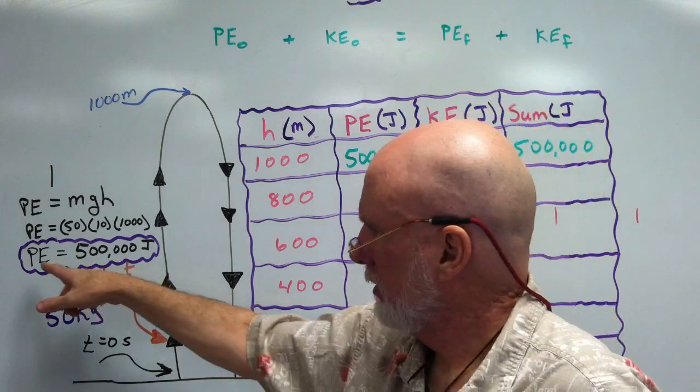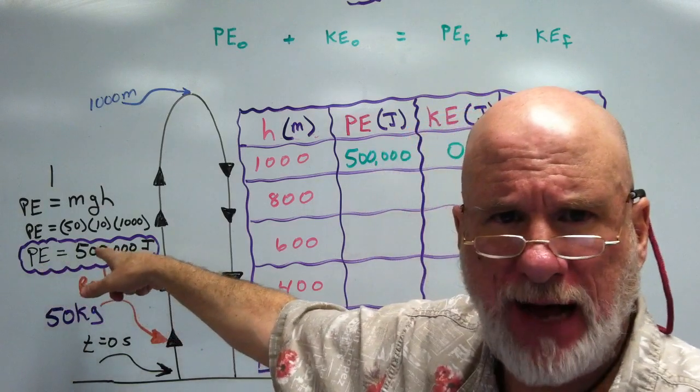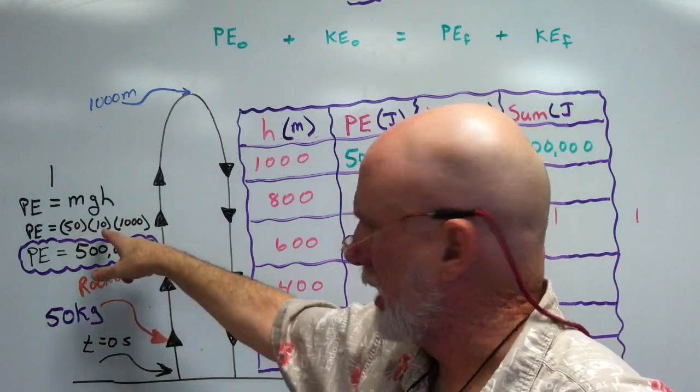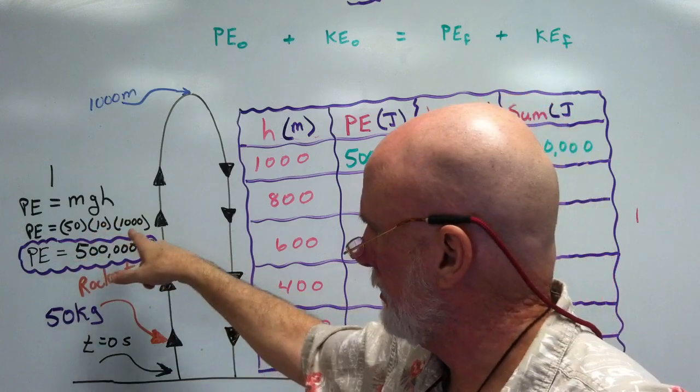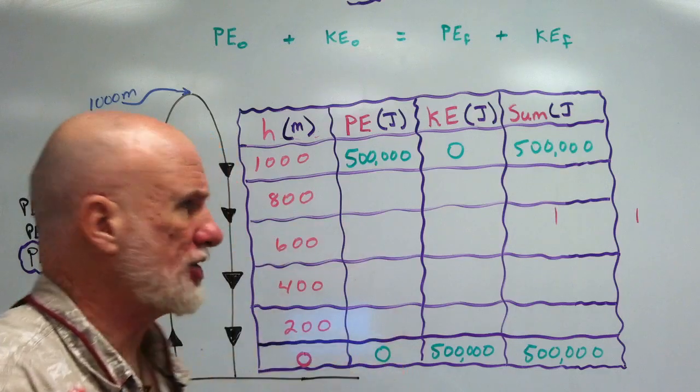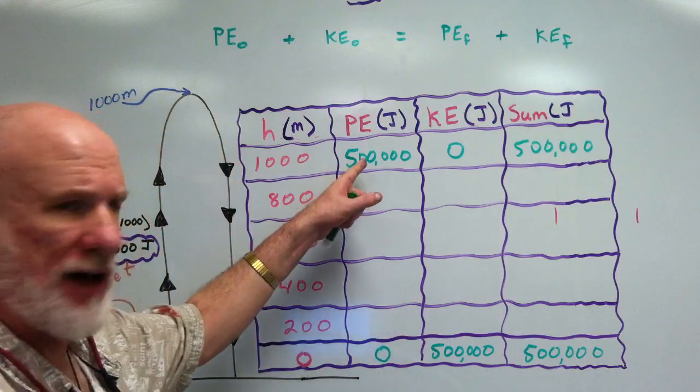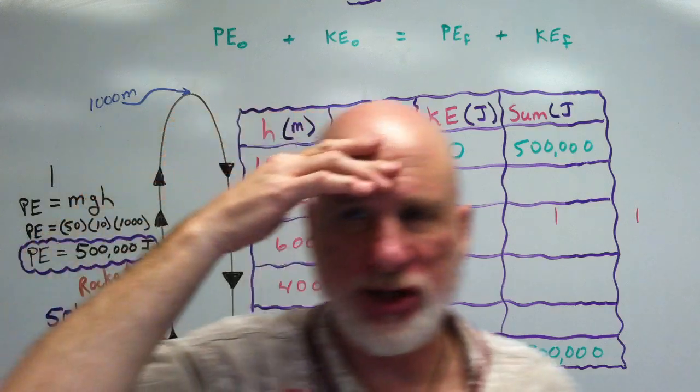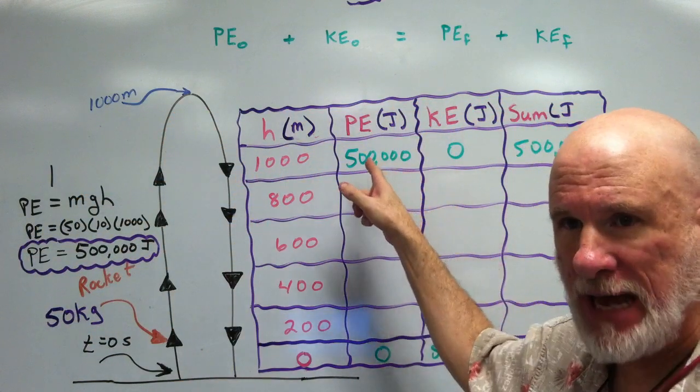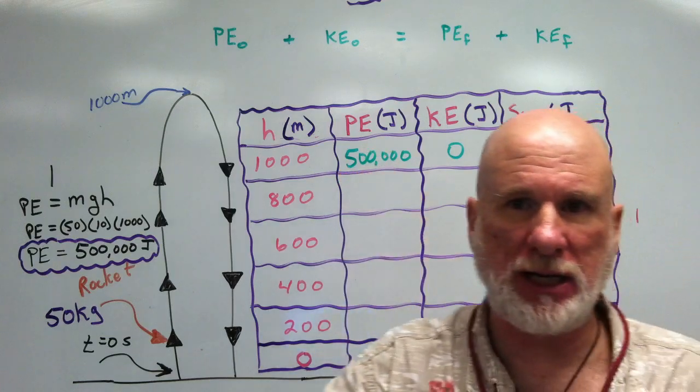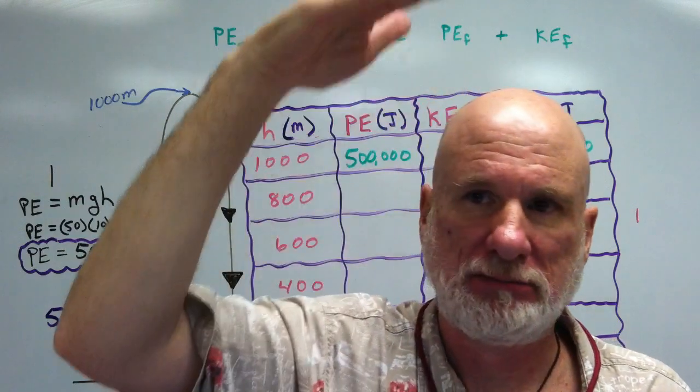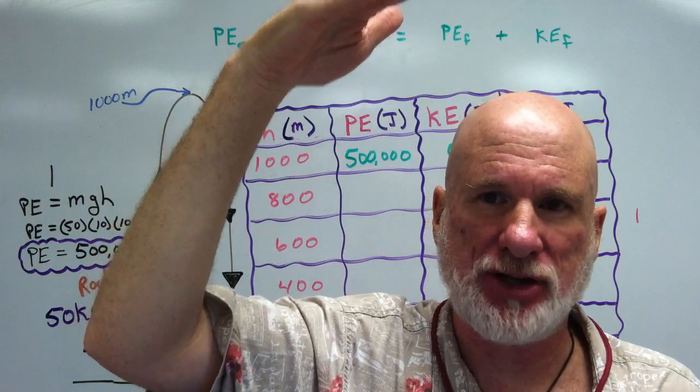Okay. Potential energy, 500,000 joules, 50 kilograms times 10 meters per second squared times 1,000 meters, MGH. So it's 500,000. Now, from that, you should be able to get the following. 500,000 would be the energy it gained through the acquisition of height. Okay? 500,000 joules.